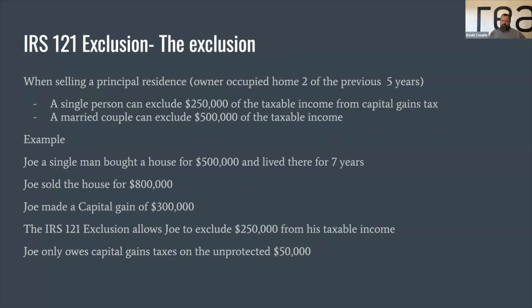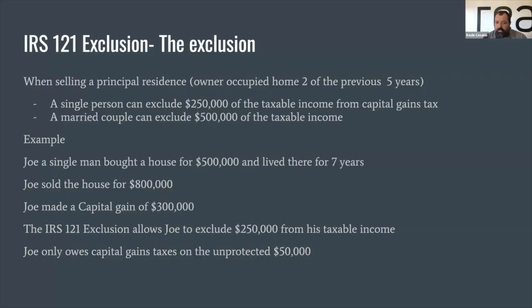The IRS 121 exclusion: when selling your principal residence, if it's owner-occupied for two of the previous five years — meaning, hey I've lived in the home for eight years, that applies; hey I lived in the home and moved out one year ago, that applies; I moved out two years ago, that still applies but you're at the very tail end of it. A single person would be able to get 250,000 dollars of capital gains tax-free. A married couple would get 500,000 dollars of capital gains tax-free. Example: Joe, a single man, bought a home for 500,000 and lived in it seven years, then sold his home for 800,000 — that's 300,000 in capital gains.